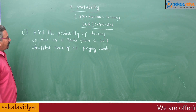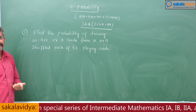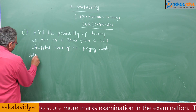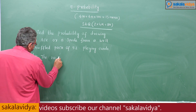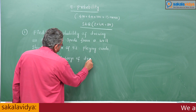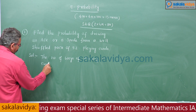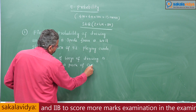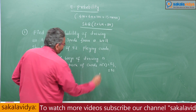First, the number of ways of drawing a card from a pack of cards — n(S) is equal to 52C1, so that is 52.